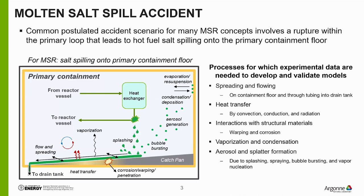The overarching objective of our testing efforts is to provide experimental data needed to close identified gaps in mechanistic source term and accident progression models. For many MSR concepts, a postulated accident scenario involves a rupture within the primary loop that leads to molten fuel salt spilling onto the reactor containment floor. We divided the key processes into five categories: molten salt spreading on the containment floor and flowing into a drain tank; heat transfer from the salt to its surroundings; interactions between the spilled salt and structural materials by warping and corrosion; vaporization and condensation of radionuclide species from the salt; and splatter formation and aerosol generation.